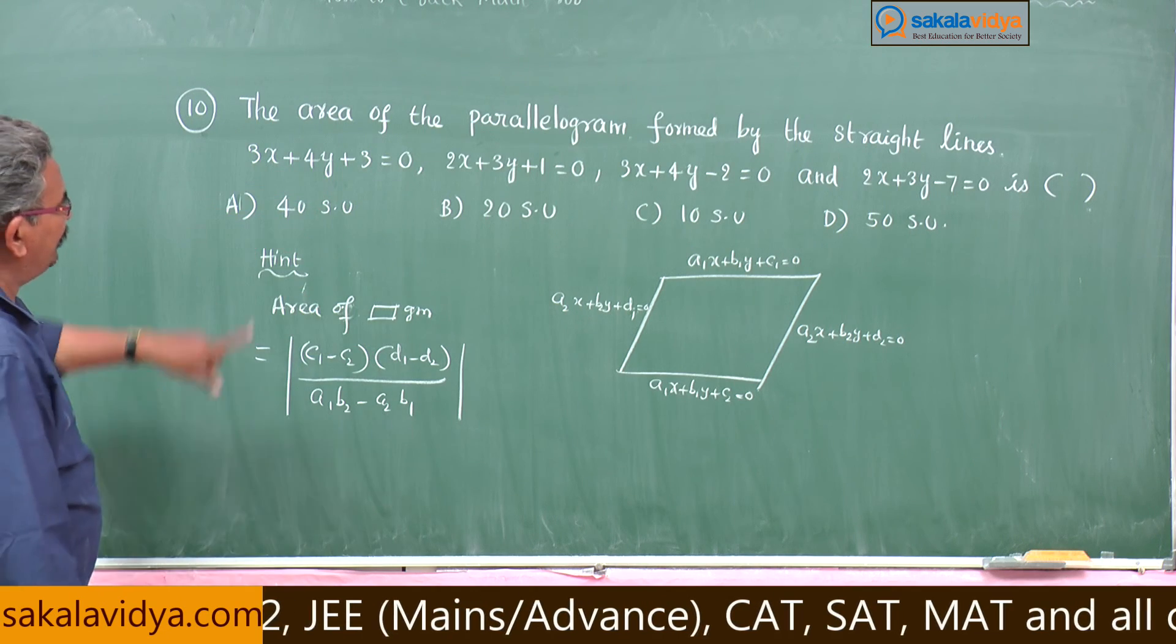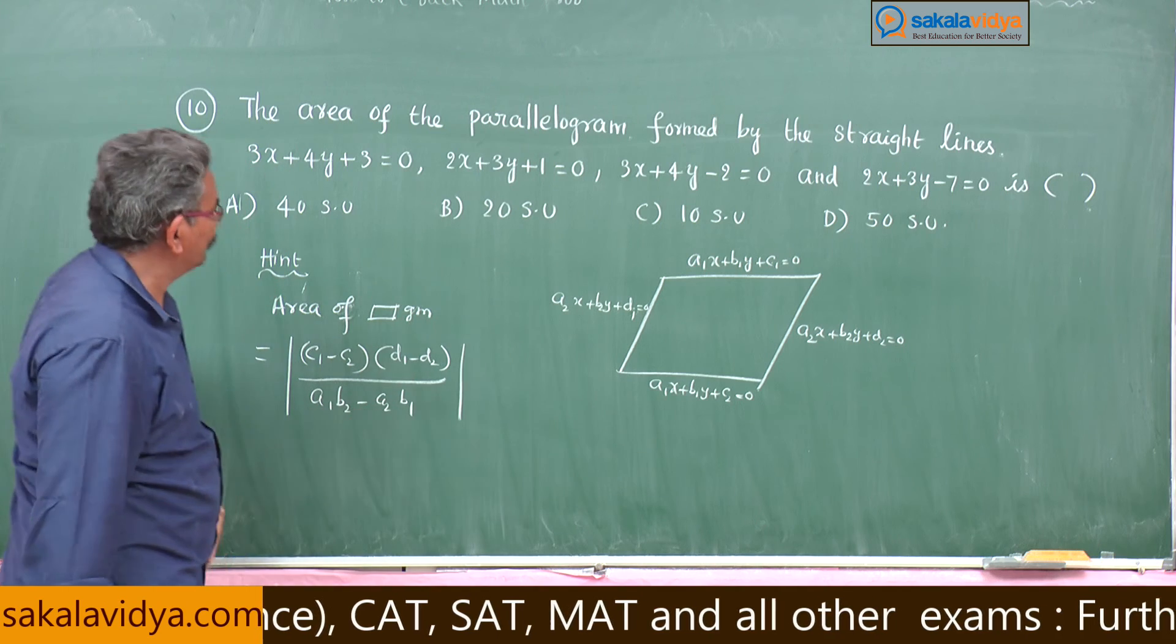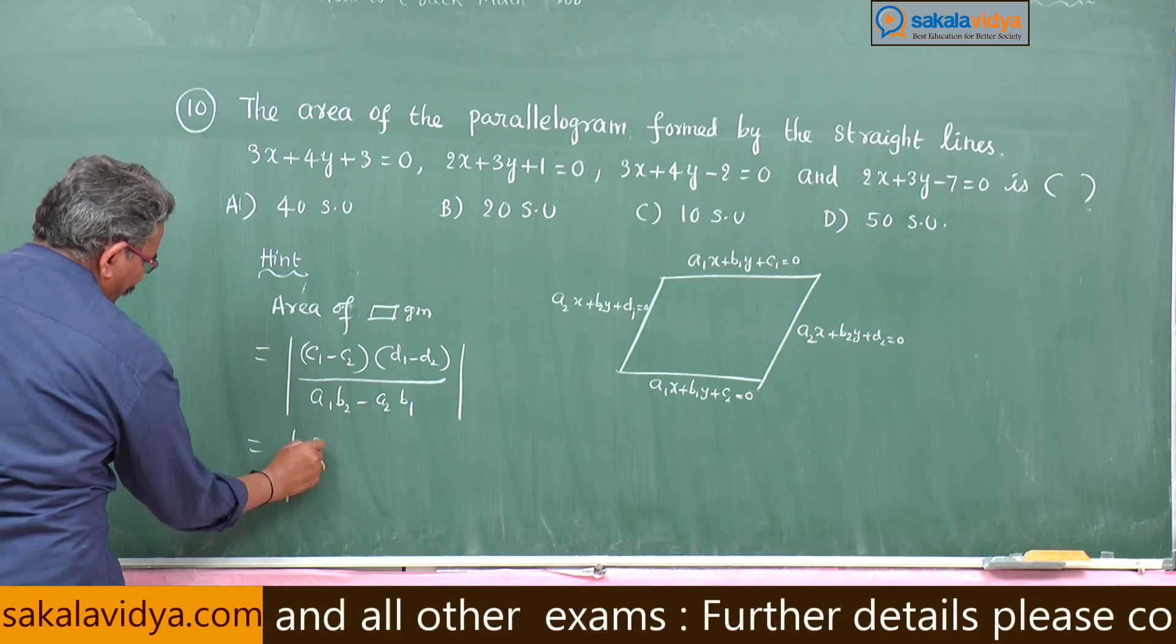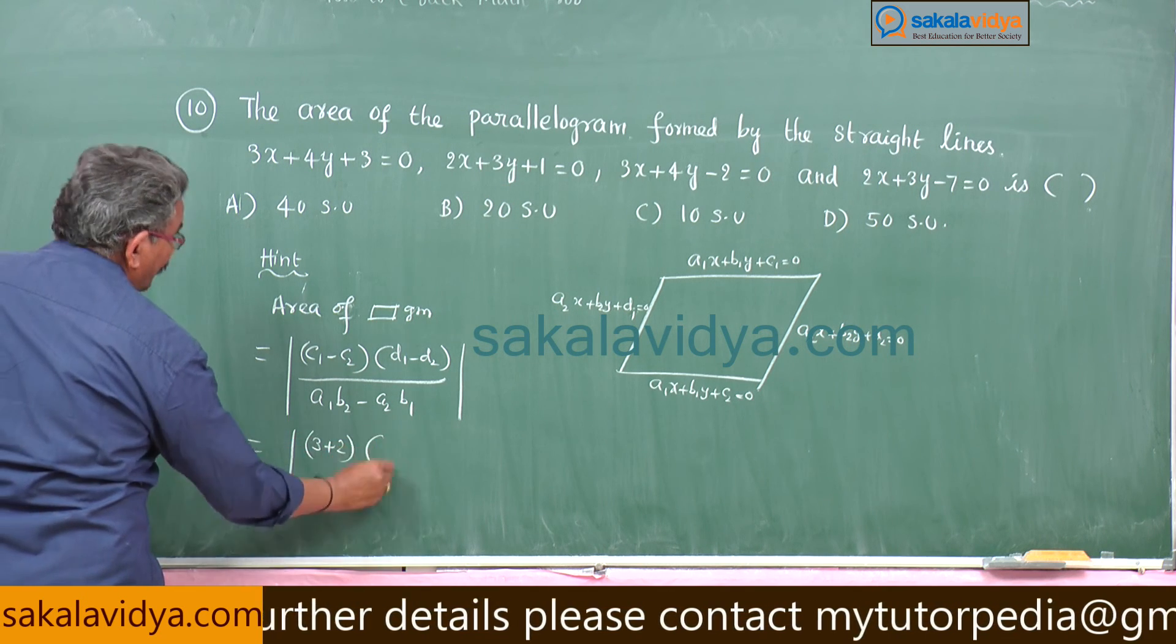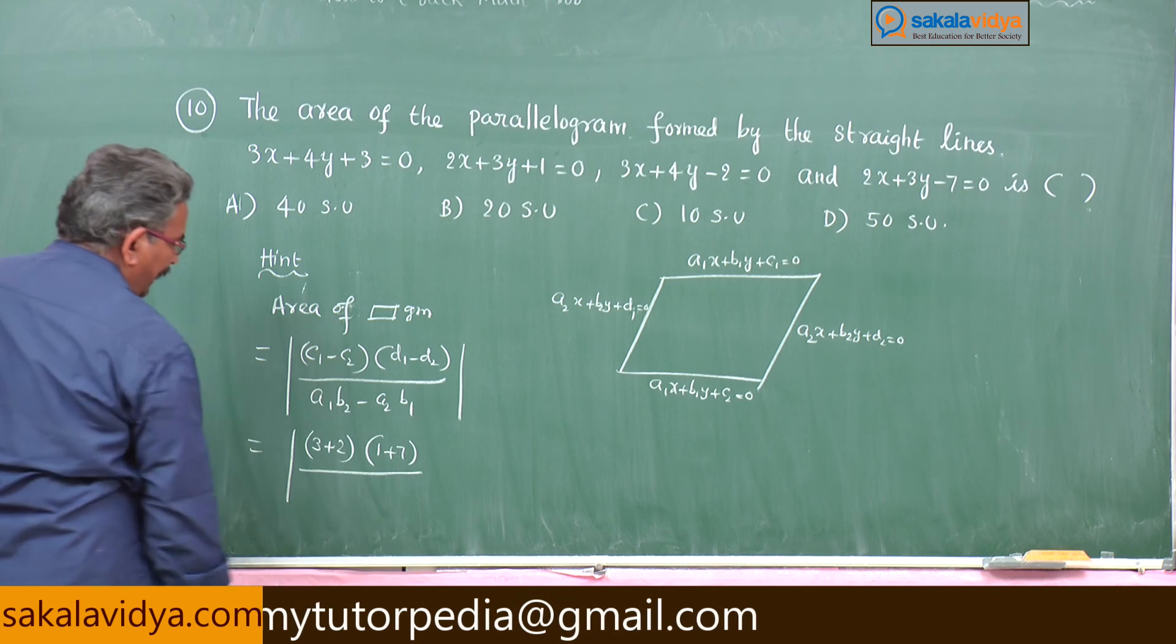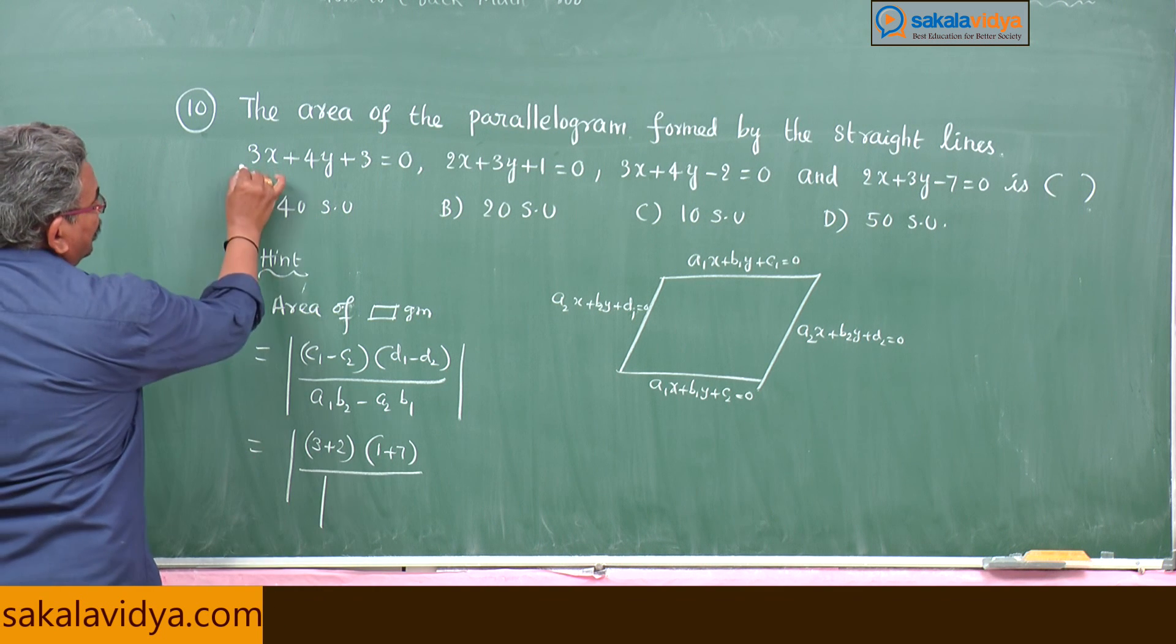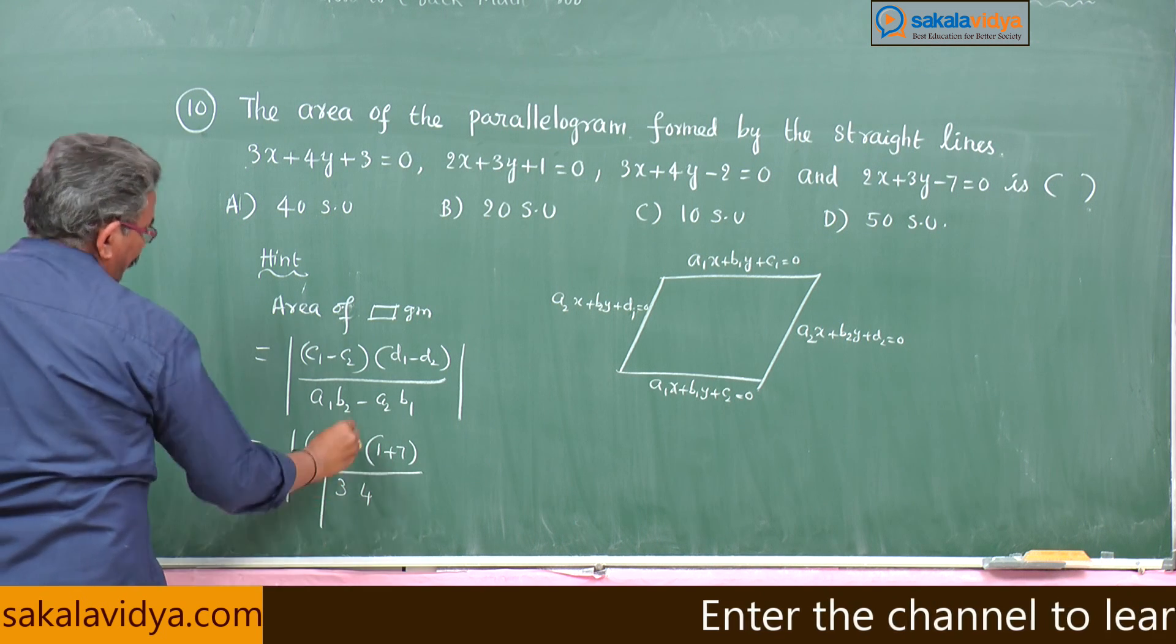If you compare these equations, c1 is 3, c2 is minus 2, so minus of minus 3 plus 2. Here 1, there 7, so 1 plus 7. And a1b2 minus a2b1, that is the determinant of 3, 4, 2, 3.